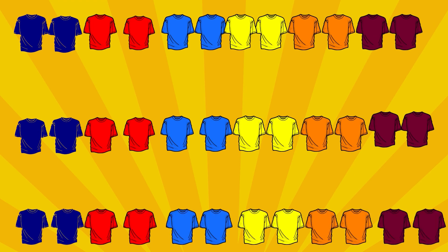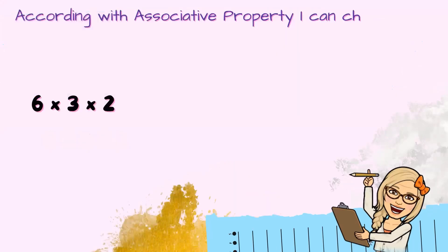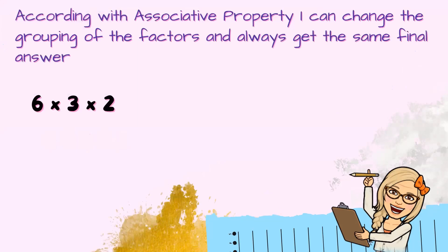If you were thinking that we need to multiply 6 times 3 times 2, you are correct — we need to multiply. Of course, we're going to use the associative property of multiplication. According to the associative property of multiplication, I can group the factors as I need and it doesn't affect the product.